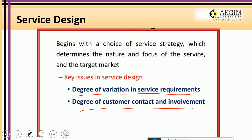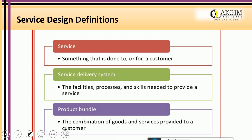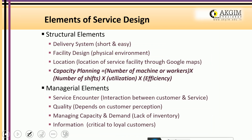A service is a performance — something that is done to or for a customer. The service delivery system involves the facilities required to deliver a service, the entire process from customer inquiry to final delivery, and the skill set needed to provide the service. A product as a whole bundle can be a combination of a good and a service, a pure service, or a pure good with some services attached.